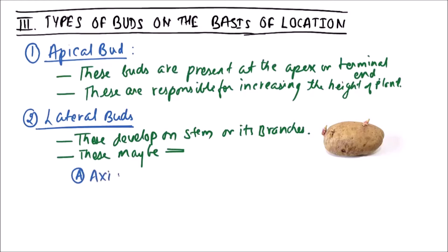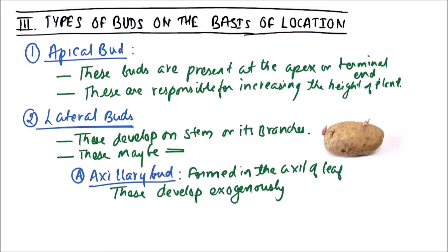First one is axillary bud. Axillary bud is formed in the axil of a leaf. These develop exogenously from the inner layer of cortex. Example includes eye of potato. We can observe that this is an eye of potato, this is another eye of potato. So these are basically examples of axillary buds.